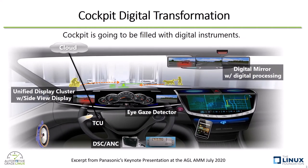Before going to the main topic, let me introduce some general backgrounds of automotive. As shown in this picture, it is an era of change in the automotive industry — the cockpit is transforming toward fully digitalized. Cockpit instruments are going to be filled with various digital instruments while being controlled by fewer ECUs, possibly by only one single ECU.